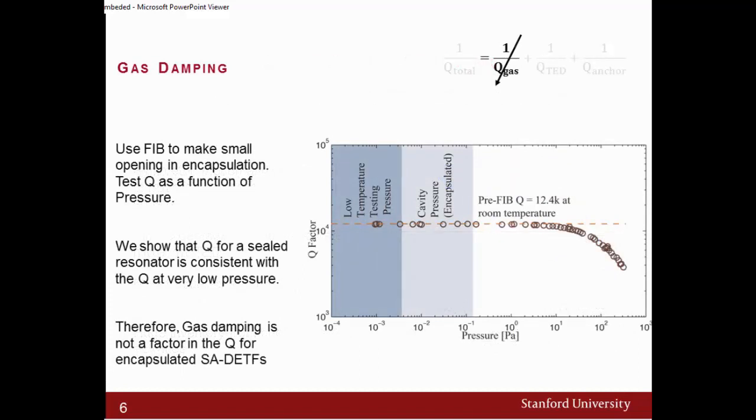In order to really isolate anchor damping, you first need to reduce or eliminate the other two dissipation mechanisms. The first thing that we did is eliminate gas damping. The way we eliminated gas damping was that we have our original resonators encapsulated. Then we drill a hole using a focused ion beam, we break the encapsulation, and then we let air in.